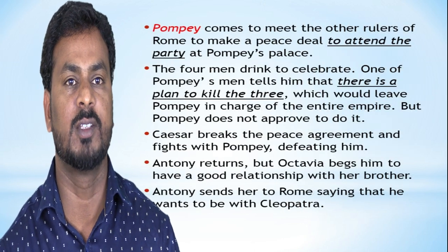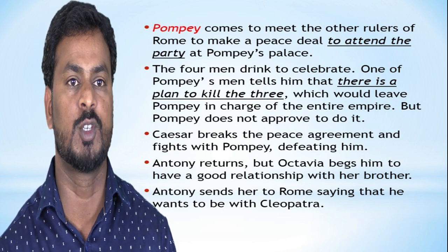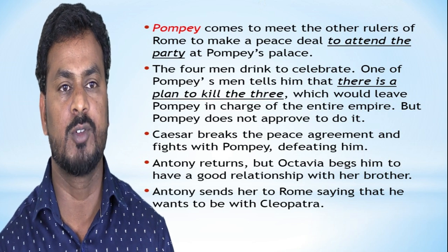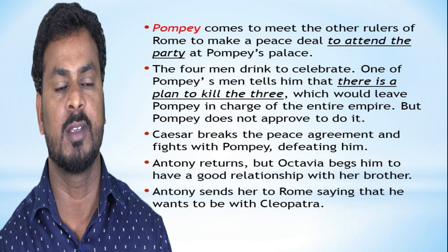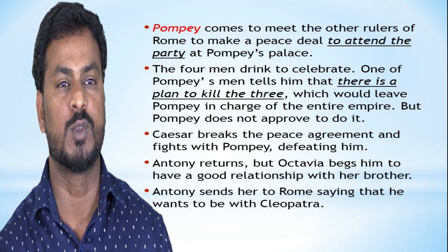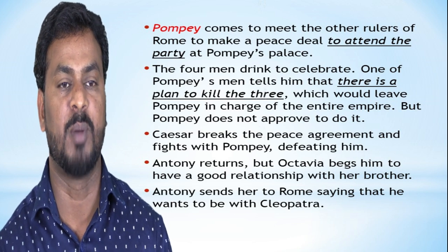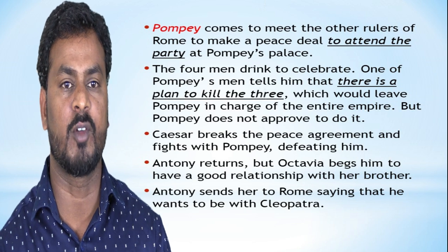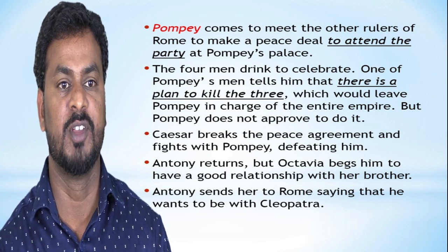Pompey comes to meet the other rulers of Rome to make peace, and the rulers attend a party at Pompey's palace. The four men drink to celebrate. One of Pompey's men tells him that there is a plan to kill the other triumvirs, which would leave Pompey in charge of the entire empire. But Pompey does not approve of the plan. Caesar eventually breaks the peace agreement and fights Pompey, defeating him.